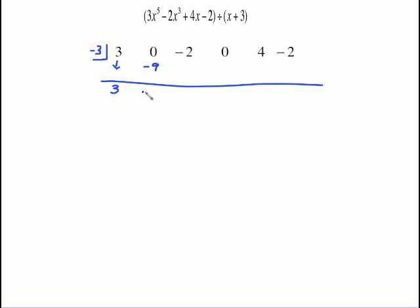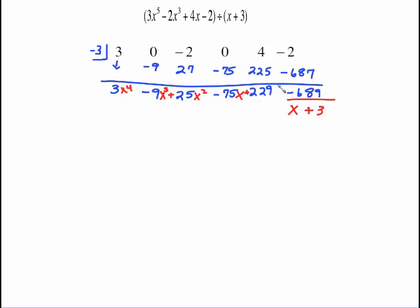Negative 3 times 3 is negative 9. Add and get negative 9. Negative 3 times negative 9 is 27. Add and get 25. Negative 3 times 25 is negative 75. Add and get negative 75. Yes, some of these numbers do get large. Don't think you've done something wrong if it happens that way. Negative 3 times negative 75 is positive 225. Add and get 229. Negative 3 times 229 is negative 687. Add and we have negative 689. So pretty large remainder. Now we're going to fill in the polynomial. That started with x to the fifth so that we always drop down one power. So this will be x to the fourth. Then this will be x cubed. That's a positive 25. So I do need to put the plus in there. x squared minus 75x plus 229 minus 689 over the x plus 3 that you divided by. So pretty large but same process.